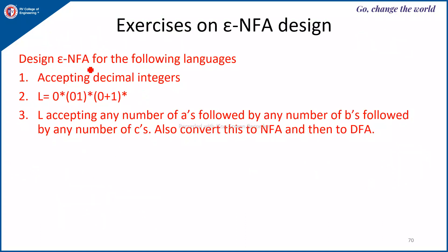We will see the problems: Design epsilon NFA for the following languages. First, accepting decimal integers — L = 0* (0|1)* (0+1)*. Second, accepting any number of A's followed by any number of B's followed by any number of C's, and convert this to an NFA and then to a DFA.